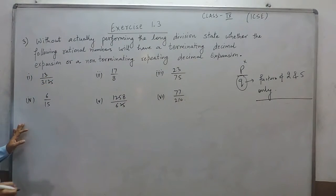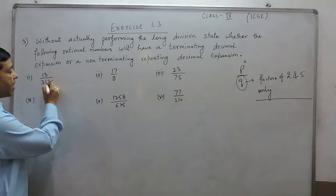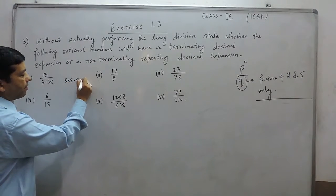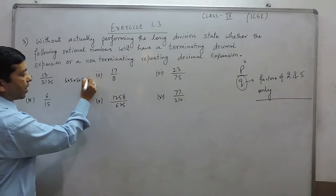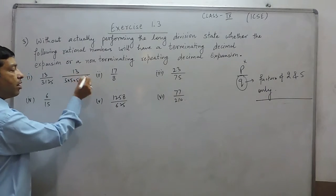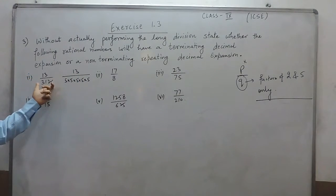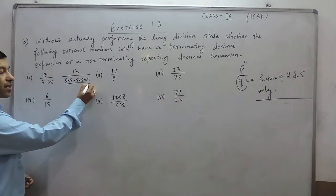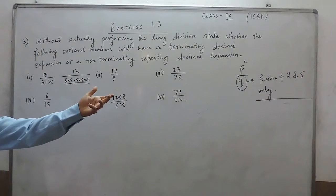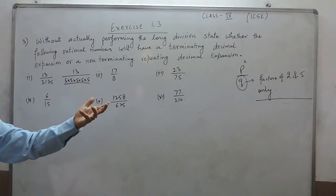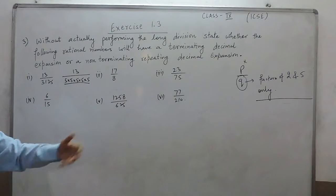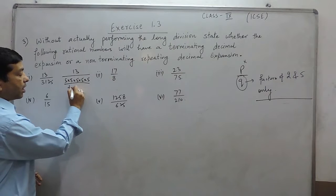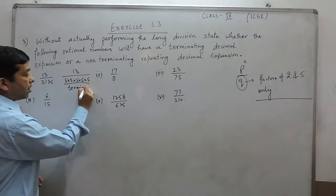Here it is 30 upon 3125. The denominator 3125 can be written as 5 × 5 × 5 × 5 × 5. So if I am finding the factors of the denominator 3125, it is all 5s. And we already know that if there are only 2s and 5s, then this will be known as a terminating decimal.